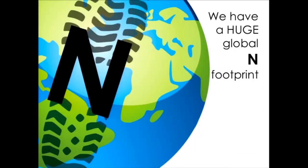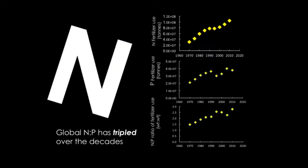There's no question we have a huge global nitrogen footprint. This is a consequence of our increasing population, our demands for food and fuel, and our agricultural use of nitrogen fertilizers, which continue to go up on a global basis. We're increasing phosphorus as well, but not nearly at the rate of change in nitrogen. As a consequence, our global N:P loads have increased at least threefold over the past several decades.